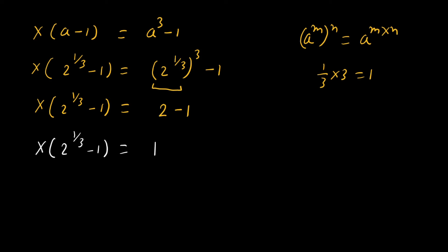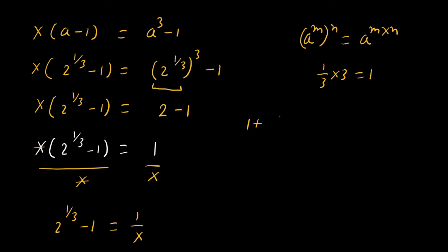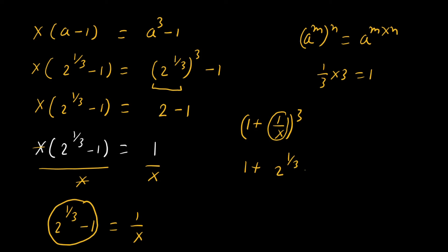If we divide both sides by x, the x cancels on the left-hand side, giving 2^(1/3) - 1 = 1/x. We need to find the value of (1 + 1/x)³. Substituting 1/x = 2^(1/3) - 1, we get (1 + 2^(1/3) - 1)³.